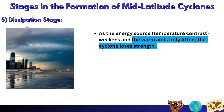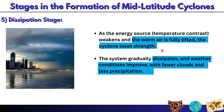Stage five is the dissipation stage, the final stage of a mid-latitude cyclone's life. As the energy source — the temperature contrast — weakens, the warm air is fully lifted and the cyclone loses strength. The system gradually dissipates and weather conditions improve with fewer clouds and less precipitation.